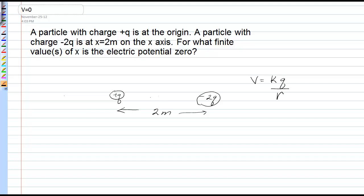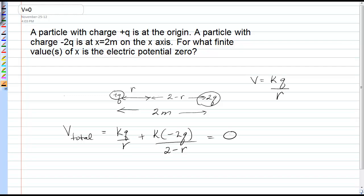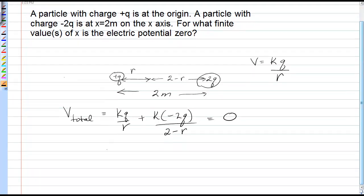So I'm going to consider the position where the charge plus q creates a positive voltage, and I'm going to call that distance r, and the distance out to the negative 2q will be 2 minus r. And the total voltage at that position would be kq over r plus k negative 2q over 2 minus r, and that would have to be zero.